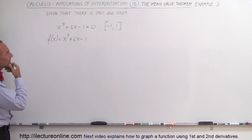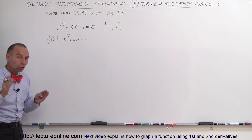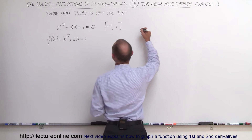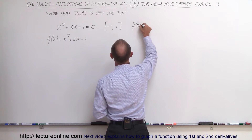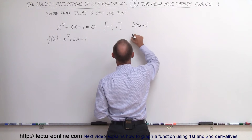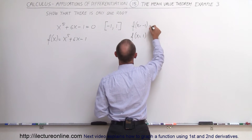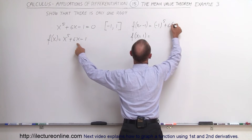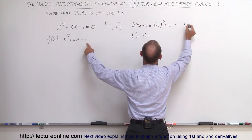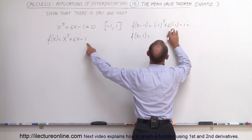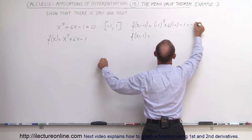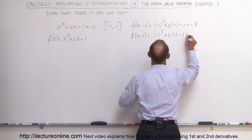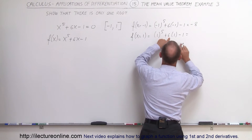We can find the slope between the straight line connecting those two points on the graph. We evaluate f(-1): negative 1 to the fifth power plus 6 times negative 1 minus 1 gives us -1 - 6 - 1, which is -8. Then f(1): 1 to the fifth power plus 6 times 1 minus 1 gives us 1 + 6 - 1, which is 6.